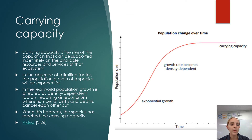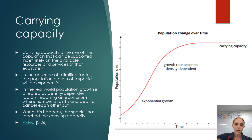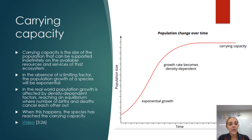Carrying capacity is an important QCAA definition: it is the size of the population that can be supported indefinitely on the available resources and services of that ecosystem. In the absence of limiting factors, population growth would be exponential — it would keep growing with no check. In the real world, limiting factors mean that births and deaths cancel each other out, and when that happens, the species has reached its carrying capacity.